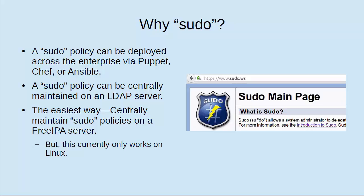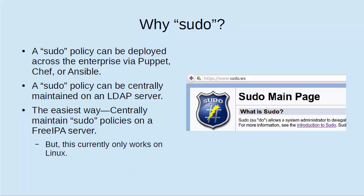You can deploy the sudo policy across the entire enterprise by a number of different methods. You don't have to run around to each individual server and manually install the policy file. Instead, you can use something like Puppet, Chef, or Ansible to automatically distribute the file to all the other servers. Or you can maintain a sudo policy in a central location on an LDAP server. Or the easiest way of all is to centrally maintain your sudo policies on a FreeIPA server. The only downside to that is that FreeIPA currently only works on Linux and is only fully implemented for Red Hat servers. But if you're in a mixed environment with Linux, Unix, and BSD servers, then those first two options are certainly good ones for you.